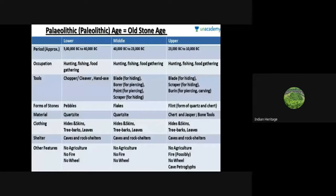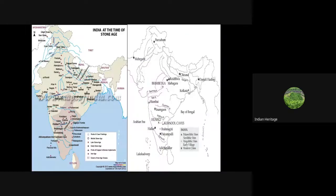Clothing is also an art, and shelters represent the start of architecture. Caves and rock shelters, though natural, were used throughout the Paleolithic period. There was no agriculture in lower or upper Paleolithic periods, but in the upper Paleolithic period some petroglyphs appear. We will see some more examples of those.